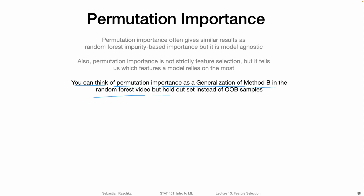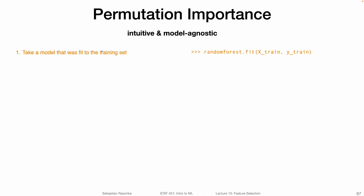You can think of permutation importance as a generalization of method B in the random forest video, but here we are using the holdout set instead of the out-of-bag samples. If you're interested, you can go back to the previous video and check out the explanation of the out-of-bag examples. Let me now walk you through the permutation importance algorithm in more detail, step by step.